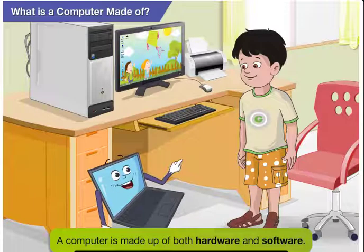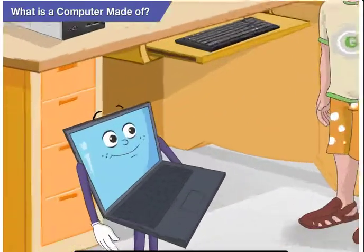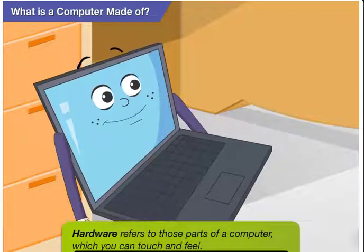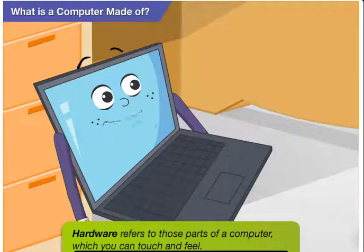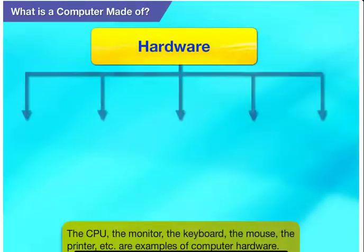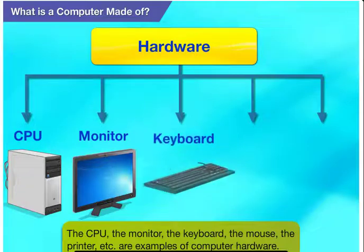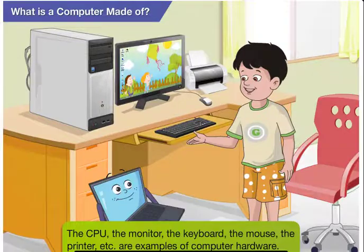Basically, a computer is made up of both hardware and software. Hardware refers to those parts of a computer which you can touch and feel. The CPU, the monitor, the keyboard, the mouse, the printer, etc. are computer hardware.